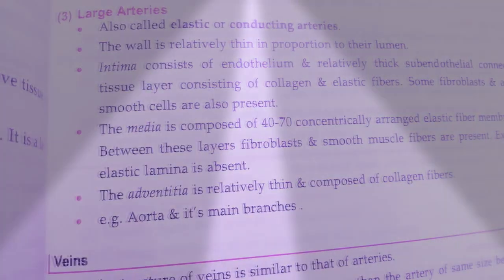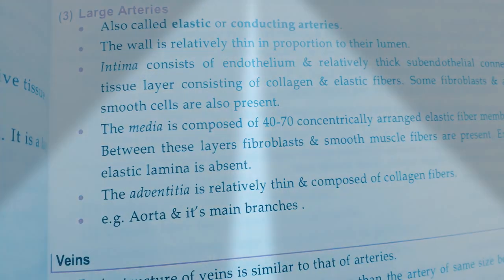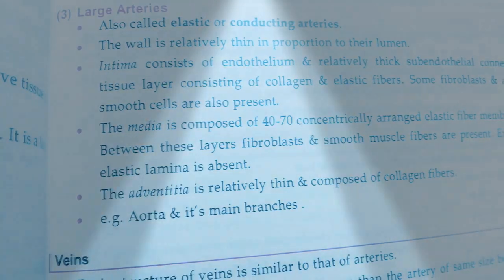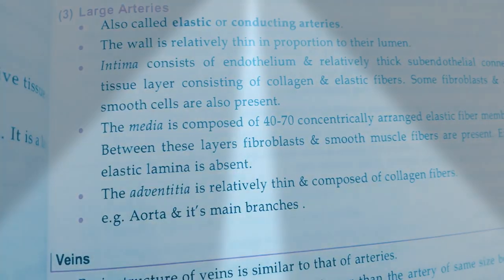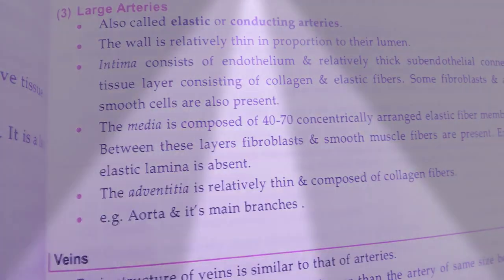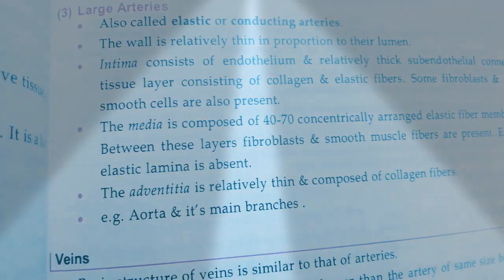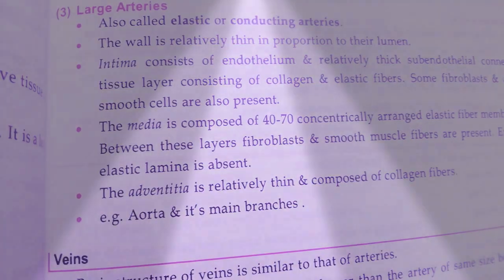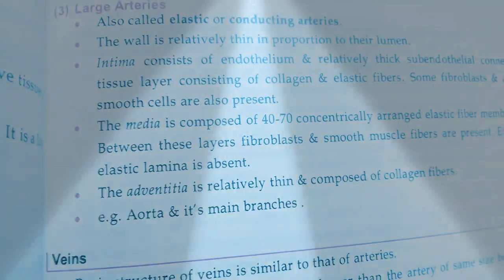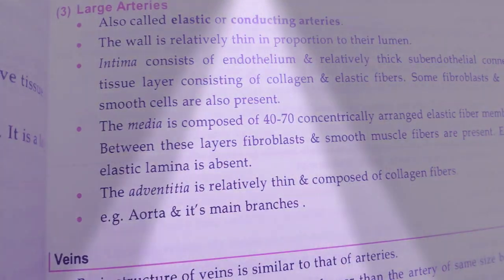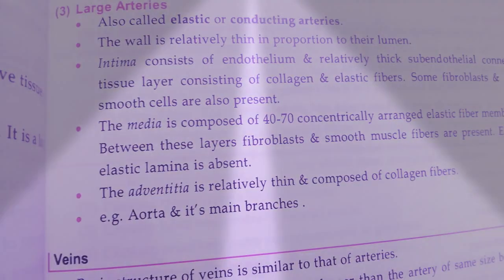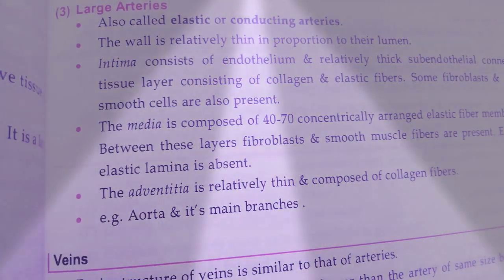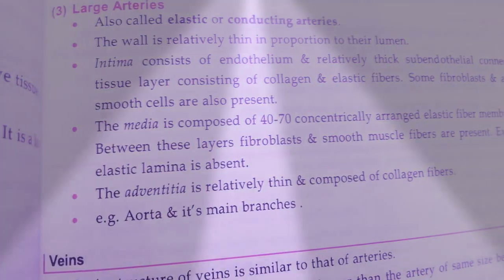The wall is relatively thin in proportion to their lumen. The intima consists of endothelium and a relatively thick subendothelial connective tissue layer consisting of collagen and elastic fibers. Some fibroblasts and smooth cells are also present. The media of large arteries is composed of 40 to 70 concentrically arranged elastic fiber membranes.